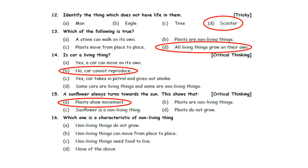Sixteenth one: which one is a characteristic of a non-living thing? The characteristics of non-living things are: they cannot grow, they cannot reproduce, and they cannot move from place to place by their own. Option A: non-living things do not grow. Option B: non-living things need food to live. Option D: none of the above. The answer is Option A — non-living things do not grow.